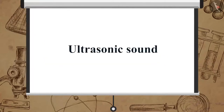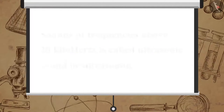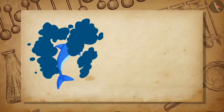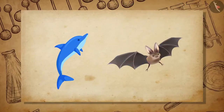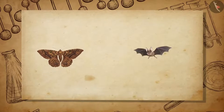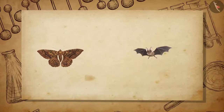Now let us learn about ultrasonic sound. Sounds of frequencies above 20 kHz are called ultrasonic sound or ultrasound. Ultrasonic sounds are produced by animals like dolphins and bats. Moths have very sensitive hearing equipment, due to which they can hear the higher frequency noise of the bat when it is nearby and take measures to avoid it.